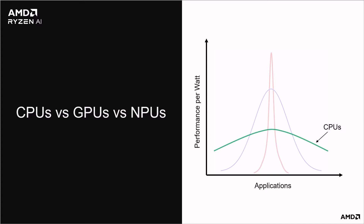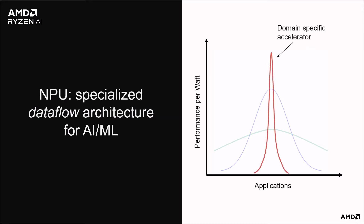First, let's compare NPUs to CPUs and GPUs. CPUs are designed for general purpose computing. They have control flow architectures that can handle lots of different types of applications with typically good performance per watt efficiency. In comparison, GPUs are more specialized for graphics and can handle some other compute with better efficiency than CPUs. In contrast, an NPU is a highly specialized domain-specific accelerator based on a data flow architecture. Data flow means that the flow of data in the chip drives computation. The NPU is designed to give higher performance and efficiency for machine learning inference.